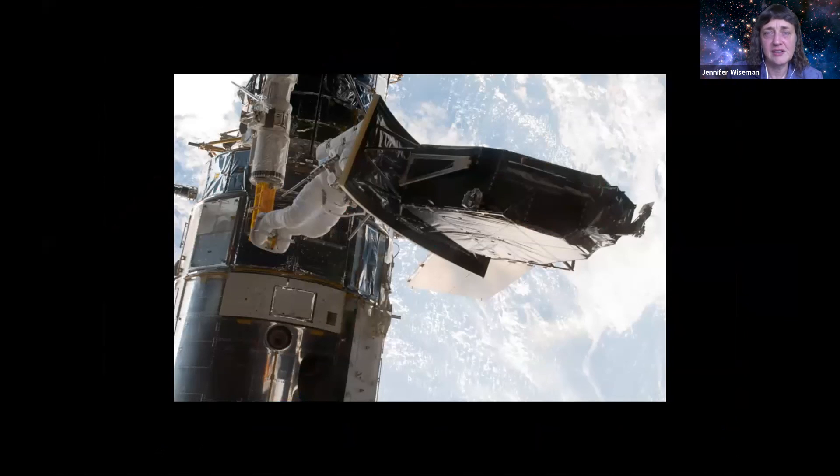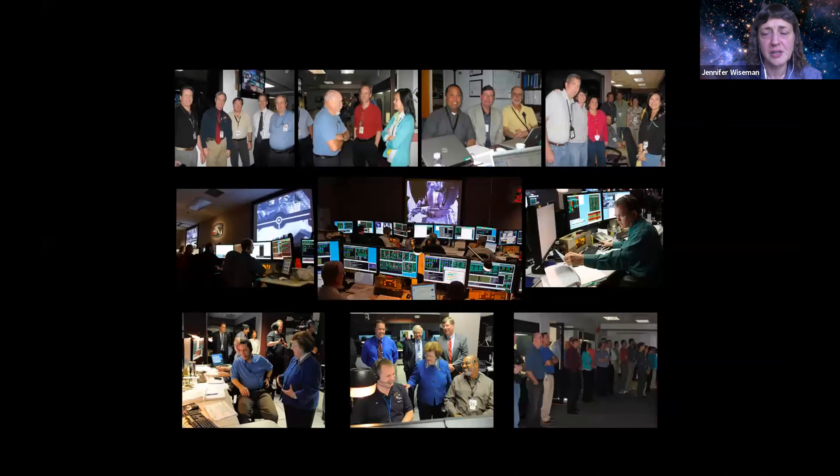They took out the Wide Field Planetary Camera 2 that I just told you about and brought it back, and it is now in the National Air and Space Museum. They also took out the COSTAR instrument, which was really not being used anymore, and brought it down. It's also in the National Air and Space Museum. They put in a new camera, the Wide Field Camera 3, which is there now, as well as a new spectrograph, the Cosmic Origins Spectrograph. They repaired the Advanced Camera for Surveys. They repaired the Space Telescope Imaging Spectrograph. So right now, we have actually three cameras and two spectrographs on the Hubble Observatory. We're using two of those cameras and both of the spectrographs.